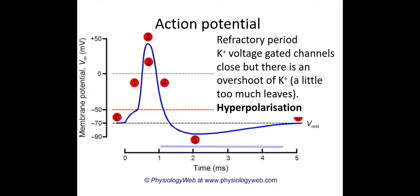The next stage of the graph is the refractory period, which includes hyperpolarisation. In the refractory period, the potassium voltage-gated channels close, but they take a little bit longer to close than ideal. As a result, a little too much potassium leaves the neuron, causing the membrane potential to drop below minus 70 millivolts. It then takes a little bit of time to re-establish resting potential again through the sodium-potassium pump. Hyperpolarisation is this overshoot of potassium where too much leaves the neuron.